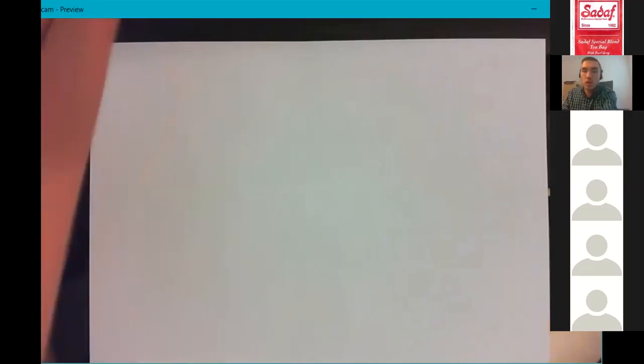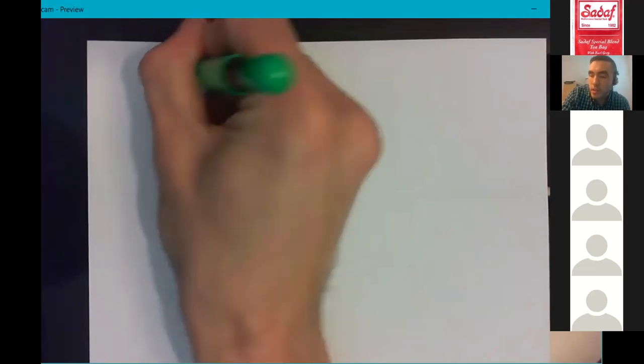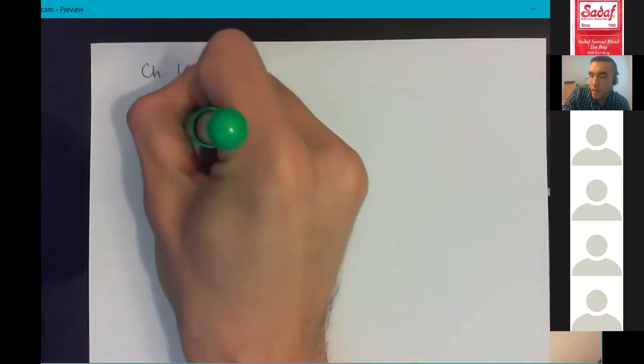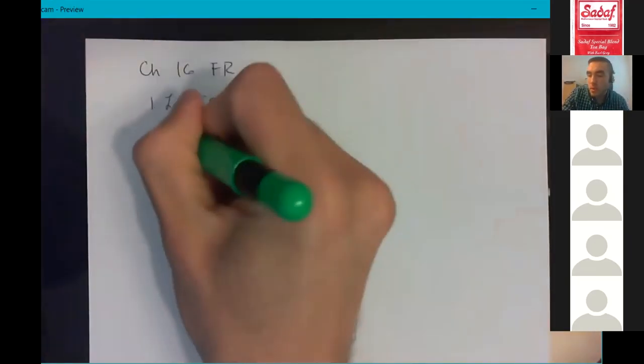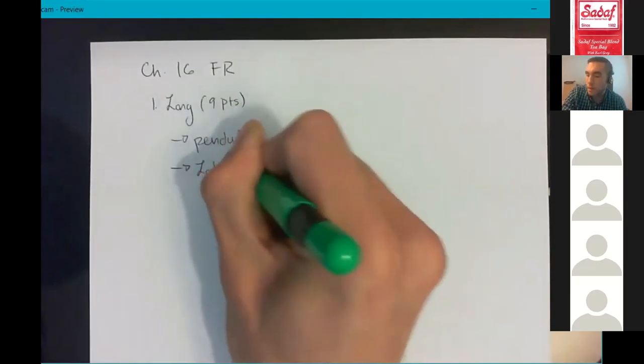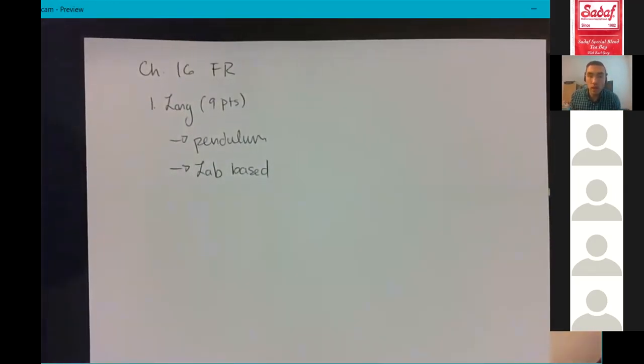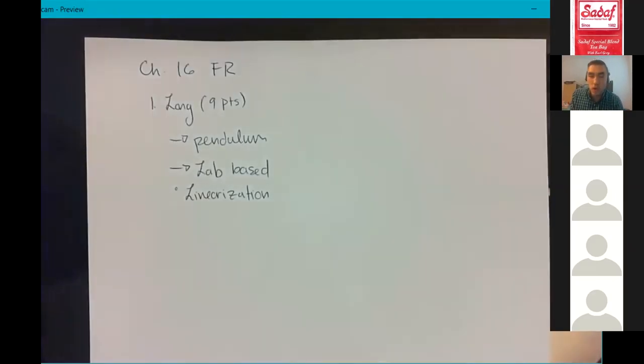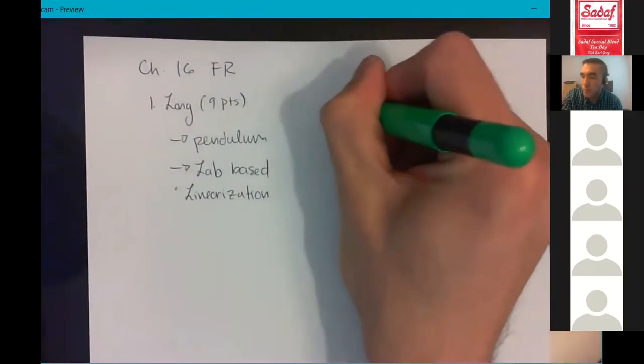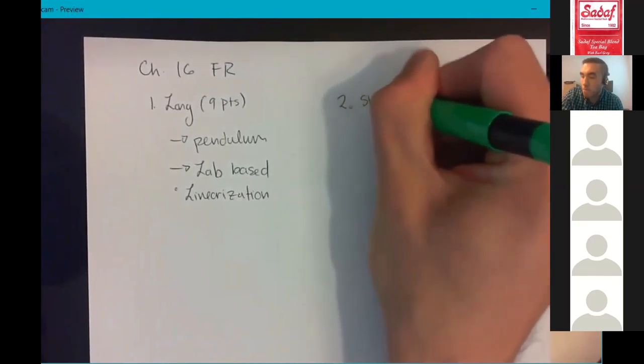Question one. So chapter 16, free response. The first question is long, which means that that one is worth nine points. And it is going to be about a pendulum. And it is lab-based. So a scenario is given to you, and then you are asked how you would do the procedure and write up the analysis in order to get the number that you want. I'm going to go ahead and warn you all that there is an element of linearization to this question. Nothing too crazy, but it will ask you what you would have to do in order to make the data linear. So if you forgot about linearization, be sure to Google it up so you have some idea what I'm asking about there.